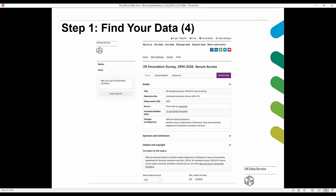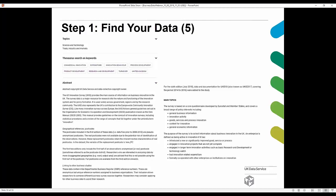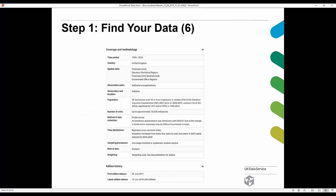Selecting a study takes you to a catalogue record with information on principal investigators, citation details, an overview of topics, and an abstract summarising the study including geographical data available and how it links to other business studies. Scrolling further shows coverage and methodology — time period, country, spatial units, observation units, and more. It's really useful to have a good look at the catalogue record when searching for studies.